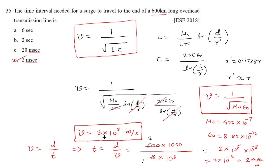Remember: v = 1/√(LC), v = 1/√(μ₀ε₀), and for free space v = 3×10⁸ m/s. Thank you.